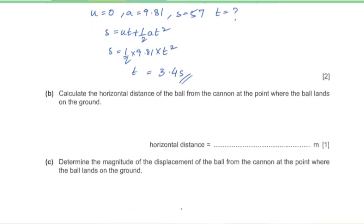Part B: Calculate the horizontal distance from the cannon where the ball lands. Horizontal distance equals horizontal speed times time. The horizontal speed remains constant at 41 m/s, so distance = 41 × 3.4 = 139.8 meters.